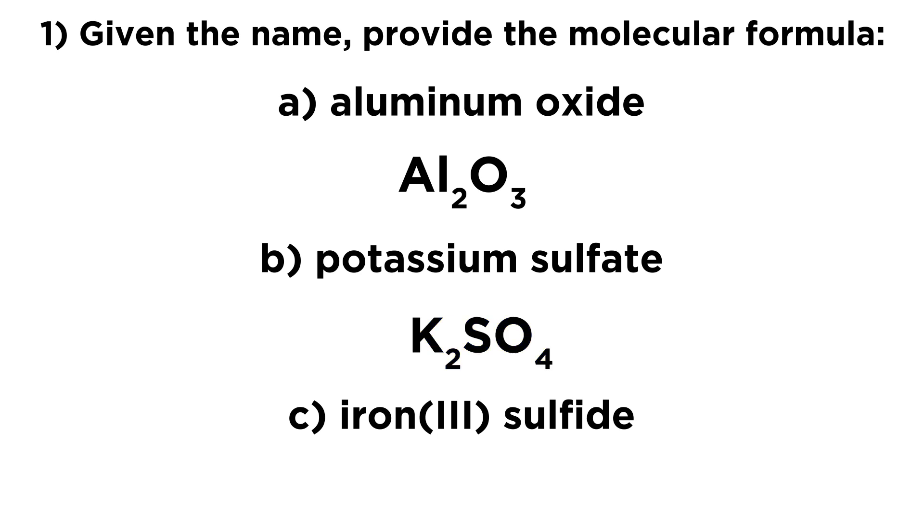Now moving on to iron three sulfide. Well, iron three, without the three, we wouldn't be too sure, because iron, as a transition metal, is capable of multiple oxidation states. But here, that's what the Roman numeral is for. Three means three plus. So when we see iron three, we know that we have Fe three plus ions.